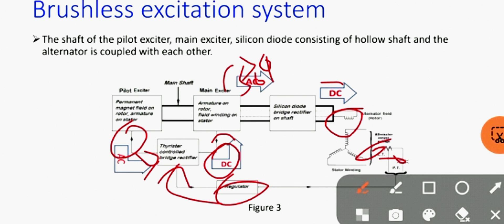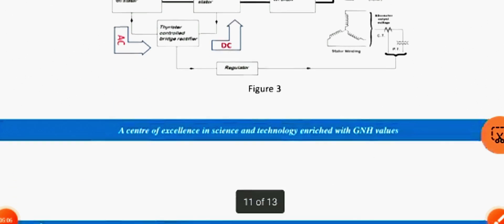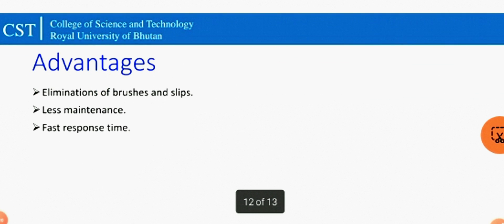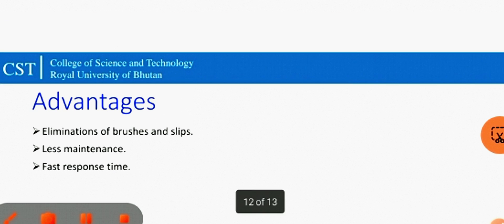You should also keep in mind that the shaft of the main exciter, pilot exciter, silicon bridge rectifier, and the field alternator are all coupled to each other. Advantages of this excitation system include elimination of brushes and slip rings, less maintenance, and fast response time. Thank you.